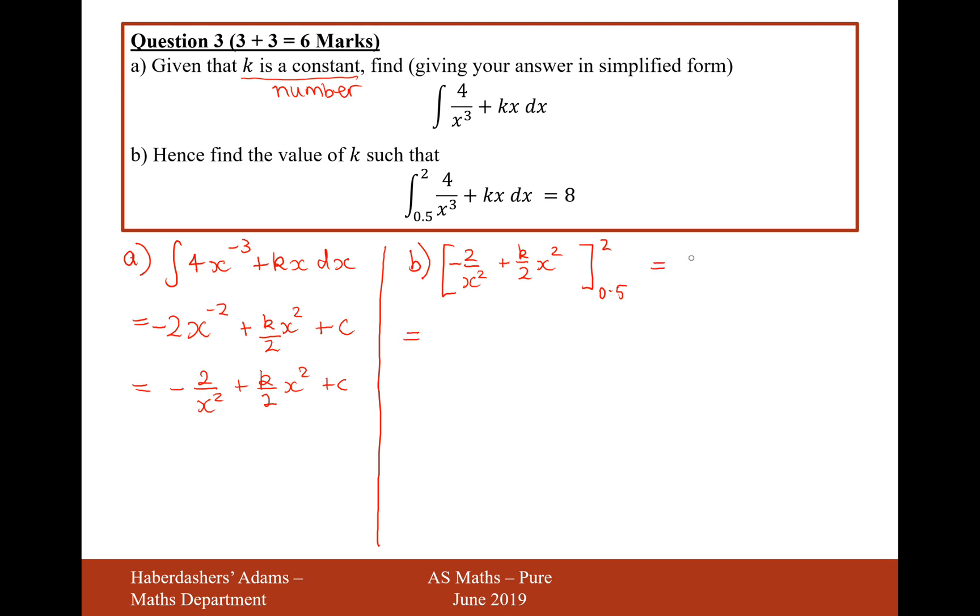Now, this thing is going to equal 8. We need to work out what k is. So let's first substitute in the first limit of 2. So that's going to be minus 2 over 4 plus 2² is 4 times by the half. That would be 2k. And then we subtract the second limit going in.